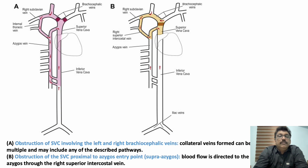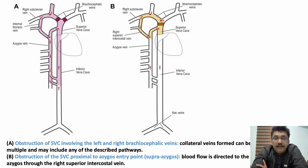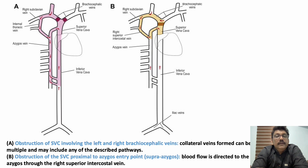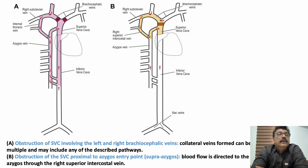The first pattern is obstruction of the SVC involving the left and right brachiocephalic veins. In this pattern, blood may travel through the azygos vein and go down to the IVC — which is very important, as the azygos vein provides a route to the IVC.